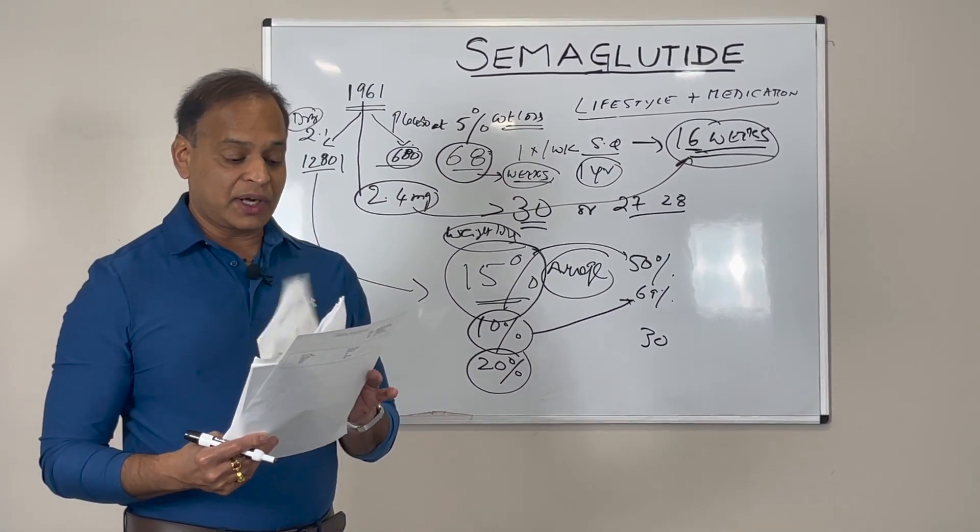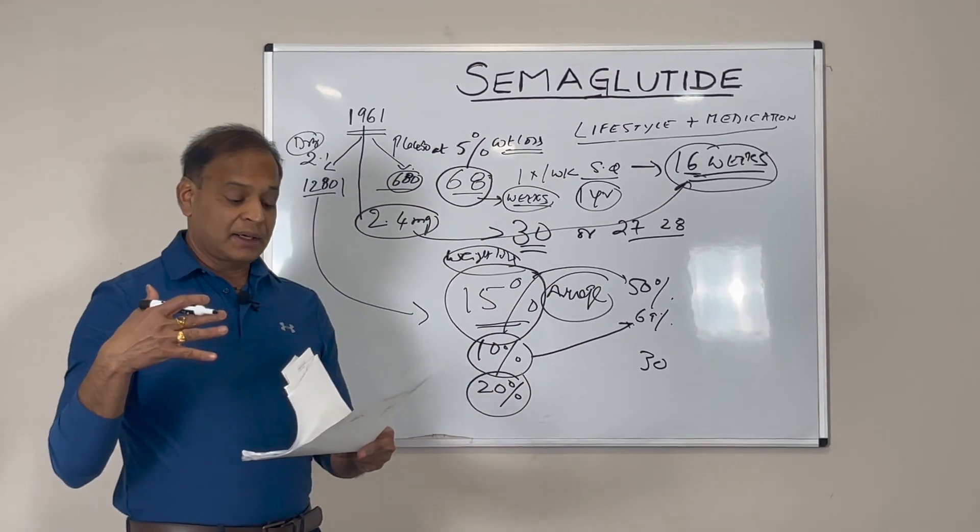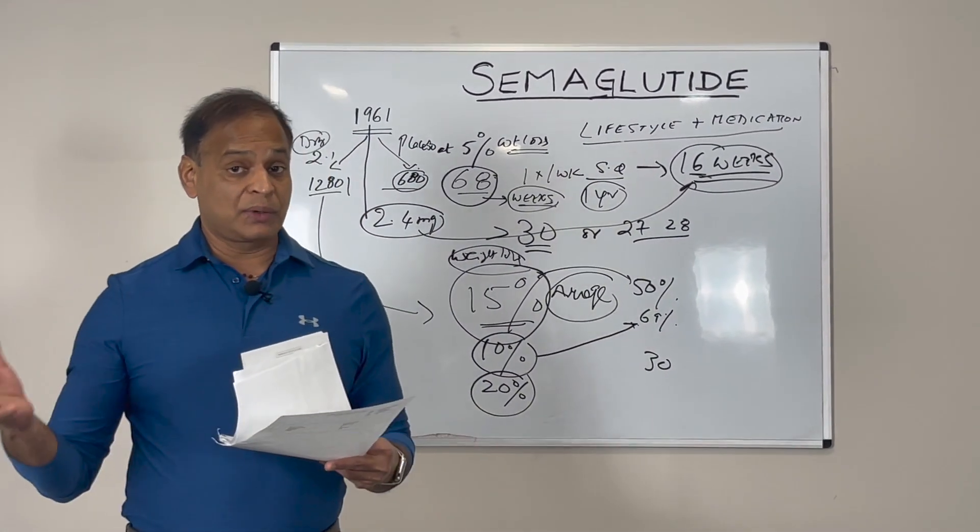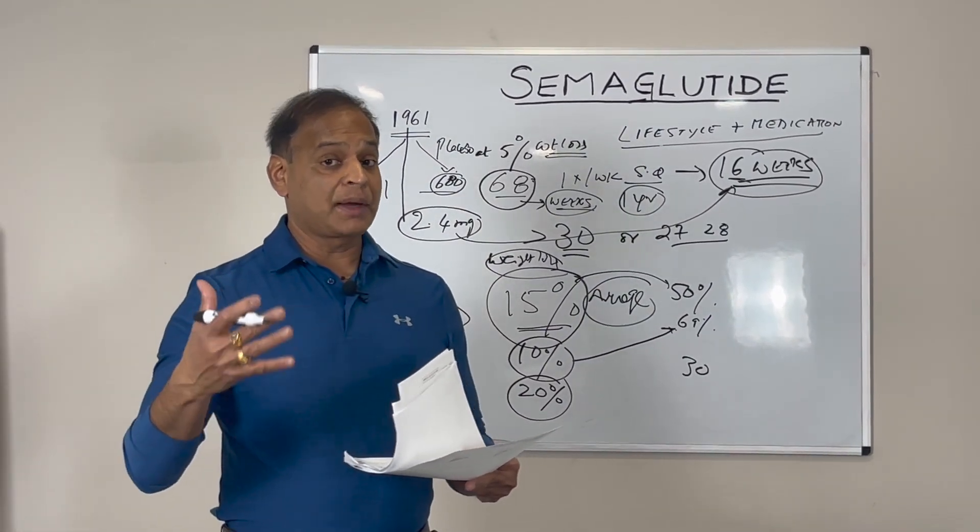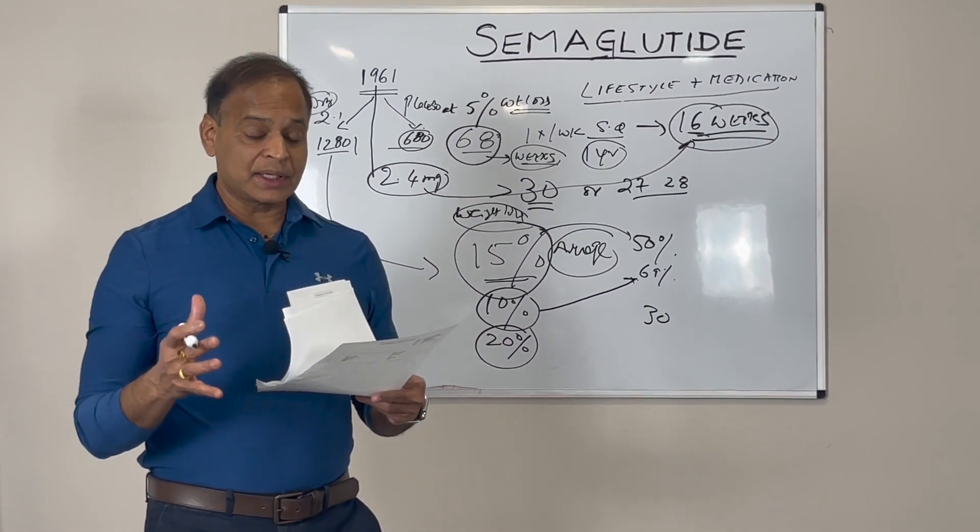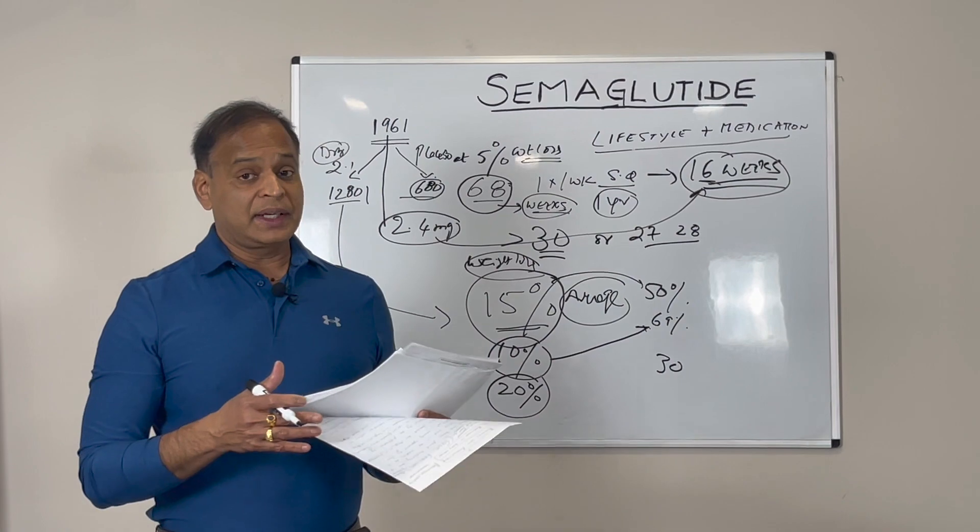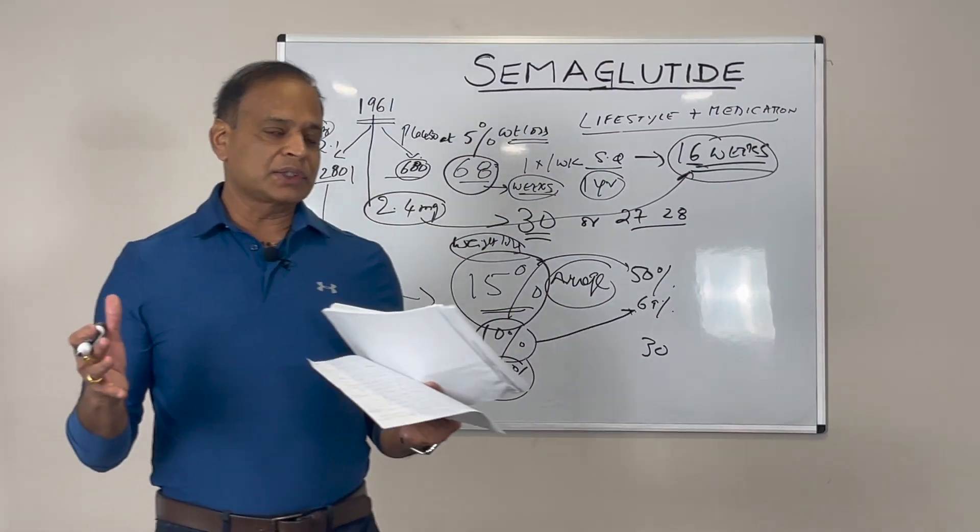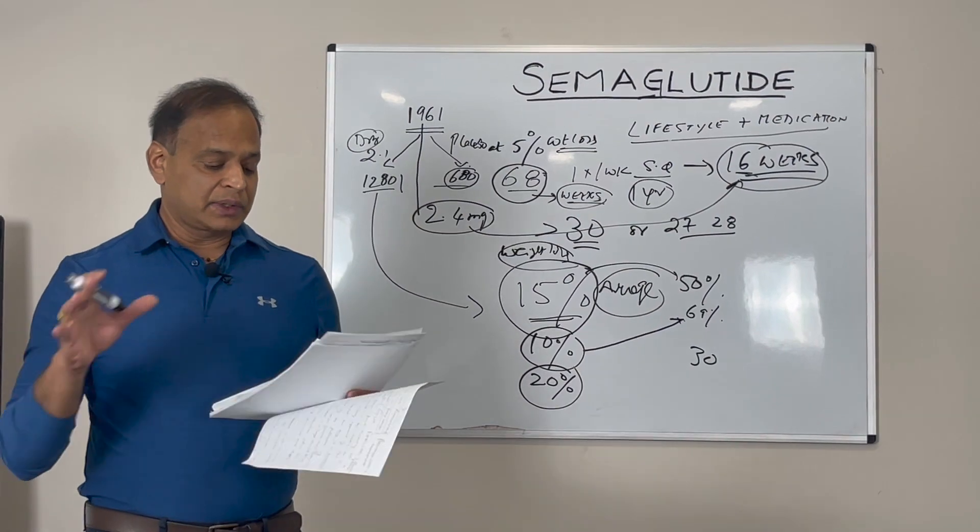This is groundbreaking for obesity specialists because we're probably going to be replacing gastric bypass. With these peptides like semaglutide and new upcoming medications, we can manage obesity without gastric bypass. Gastric bypass gives 20 to 35% weight loss.